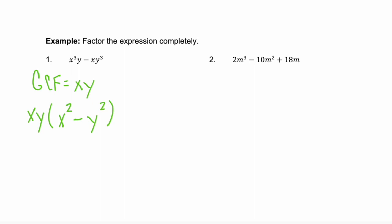Now look at that binomial that we got left with, x squared minus y squared. That's the difference of two squares. And we know the difference of two squares factors to x minus y times x plus y with our GCF in front.